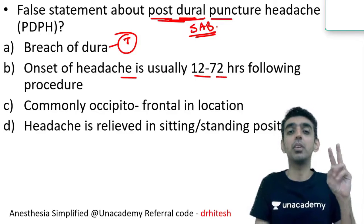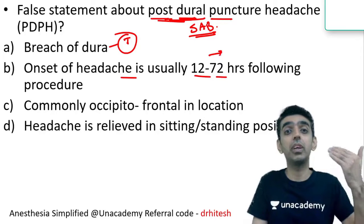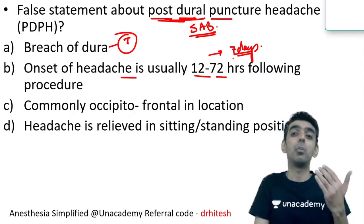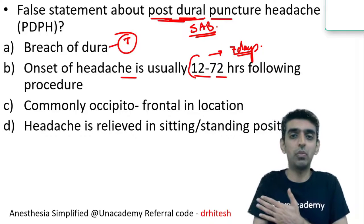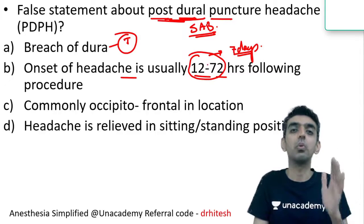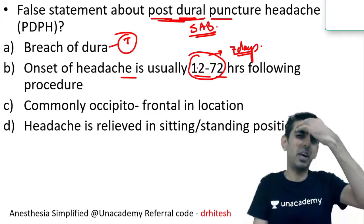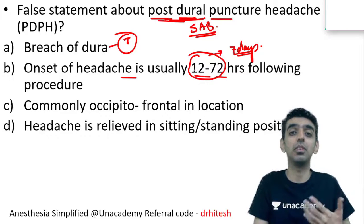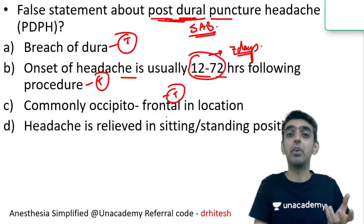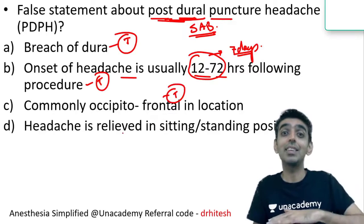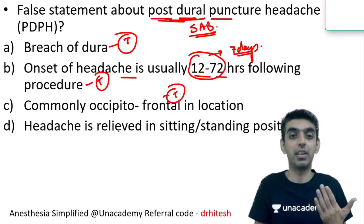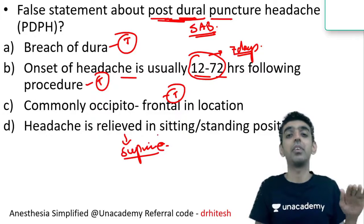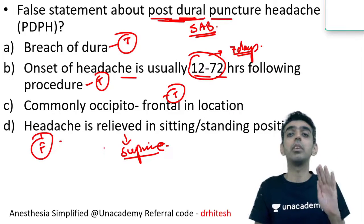The headache is most commonly frontal and occipital in location — the patient complains of pain around the eyes and in the occipital region — so option C is true. The critical point is that the headache is exaggerated by sitting or standing due to gravitational pull causing more traction on the meninges. It is relieved in the supine or lying-down position. Therefore option D — 'relieved in sitting and standing position' — is the false statement. The correct answer is option D.